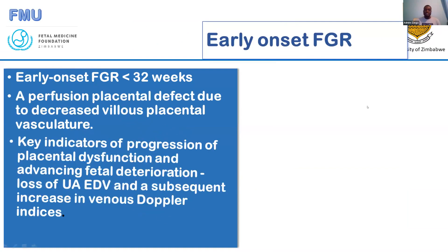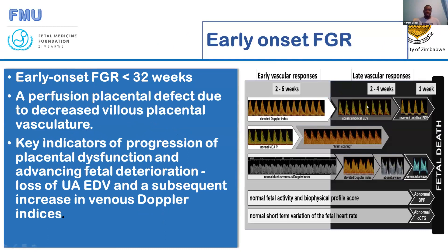There are two types of FGR categorized by the time of onset. If they occur before 32 weeks, they are referred to as early onset fetal growth restriction; if after 32 weeks, it is late onset. These are associated with an estimated fetal weight below the 10th centile and restricted diffusion across the placenta, resulting in reduced growth velocity, mainly of the abdominal circumference and also the head circumference. The key indicators of progression include increased PI in the umbilical artery, which will subsequently affect venous Doppler indices. We usually have about two to six weeks for vascular responses to manifest — these are chronic changes, not acute.